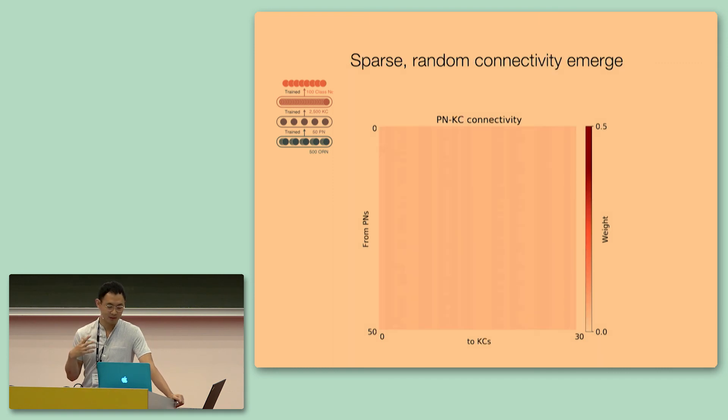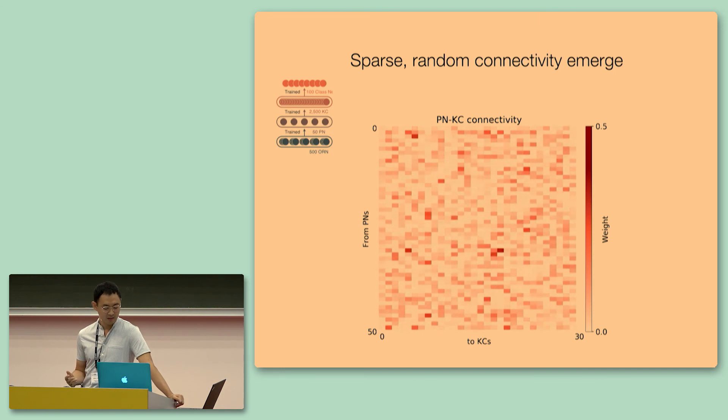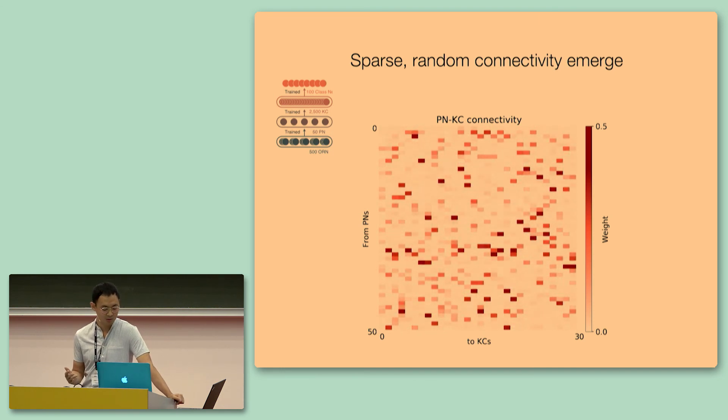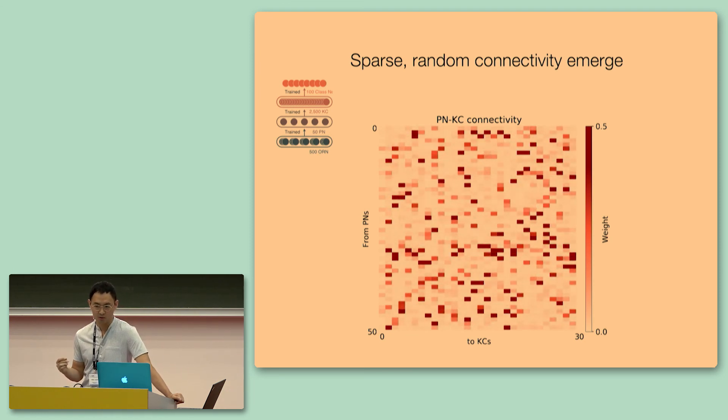Now what happens if we look at the next layer from the 50 projection neurons to the 2500 Kenyan cells? For brevity, I'm only going to show you the first 30 Kenyan cells. And what we see emerge is, again, it also converges upon the biological solution, which is that the 50 projection neurons send sparse and random inputs onto the output layer of Kenyan cells. So let's play a game here. Just look at every single column, or just pick a column to look at. But you'll see that the connectivity of the neurons that you've picked probably converges to a number that is relatively close to 6 to 8.